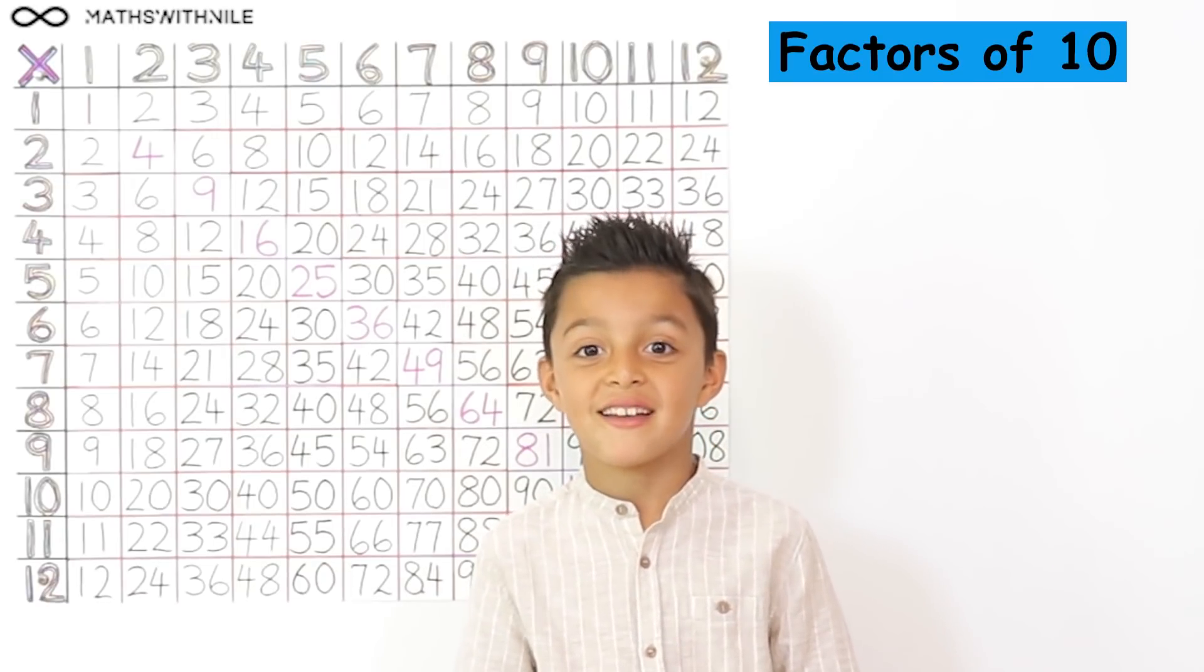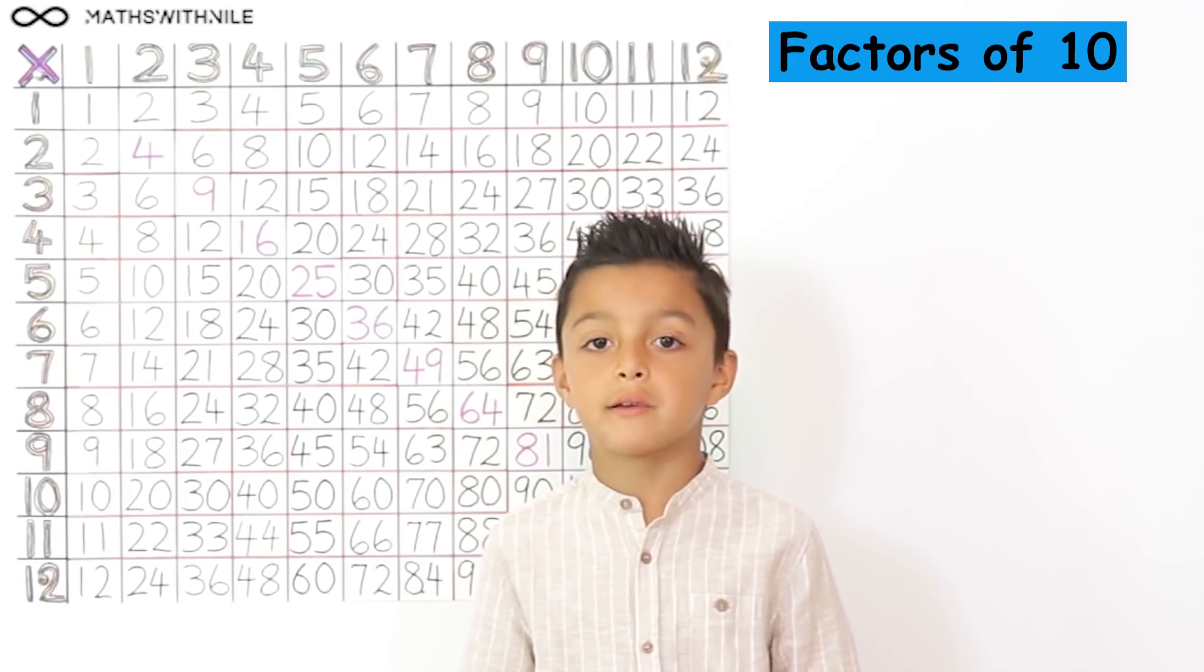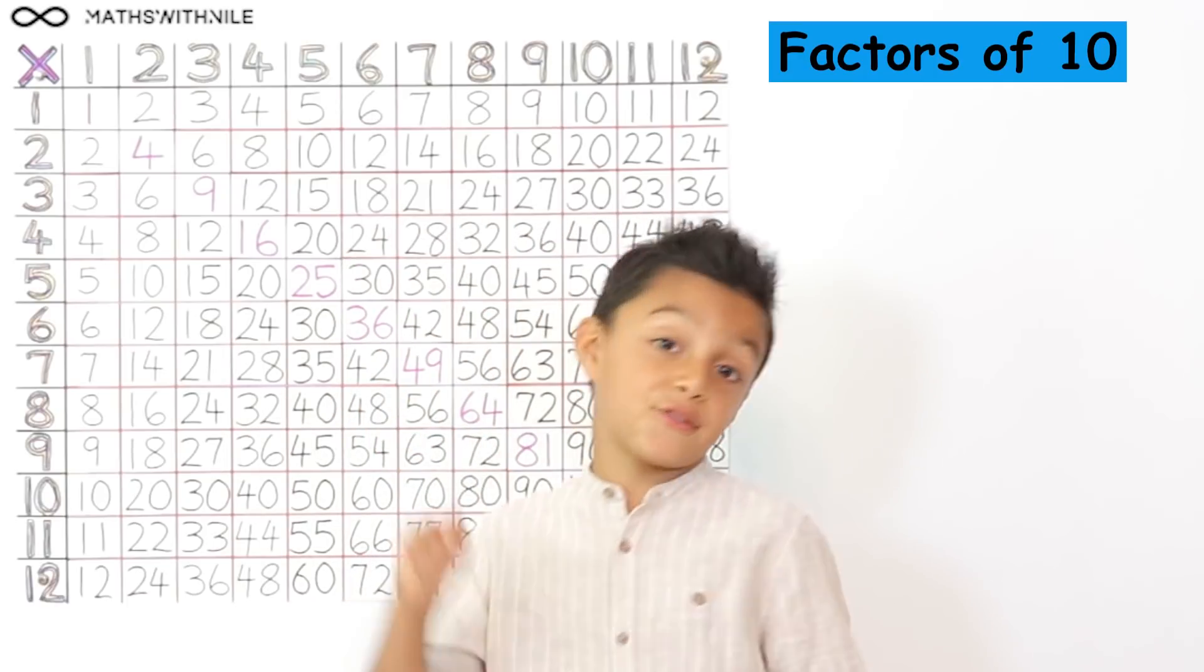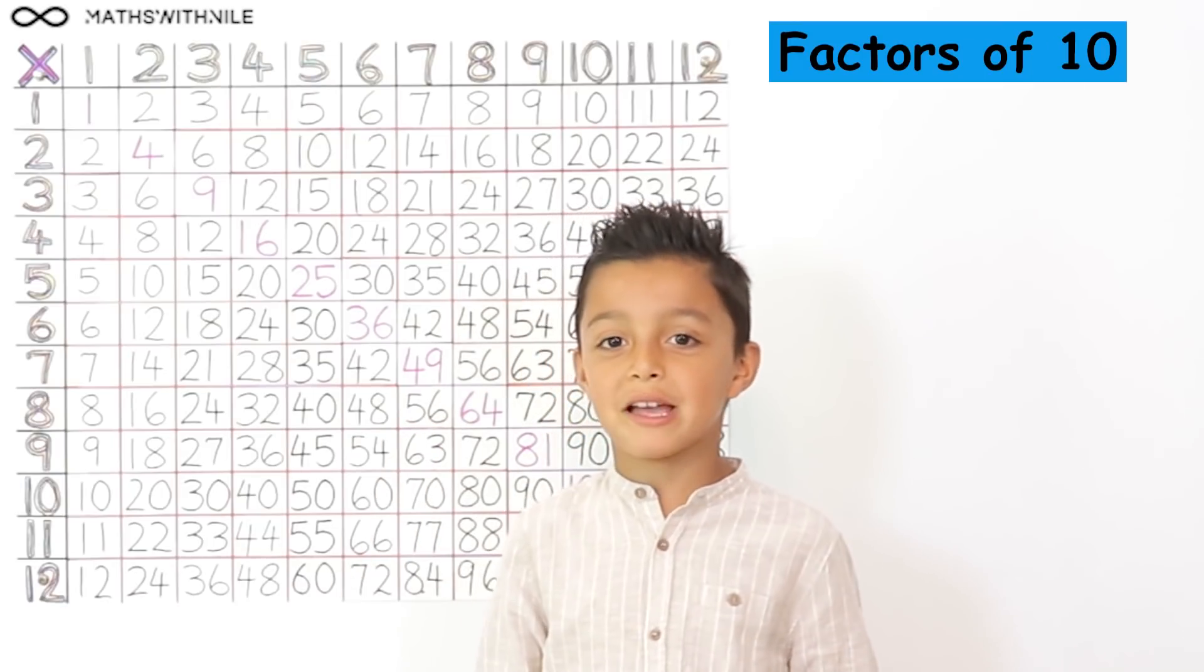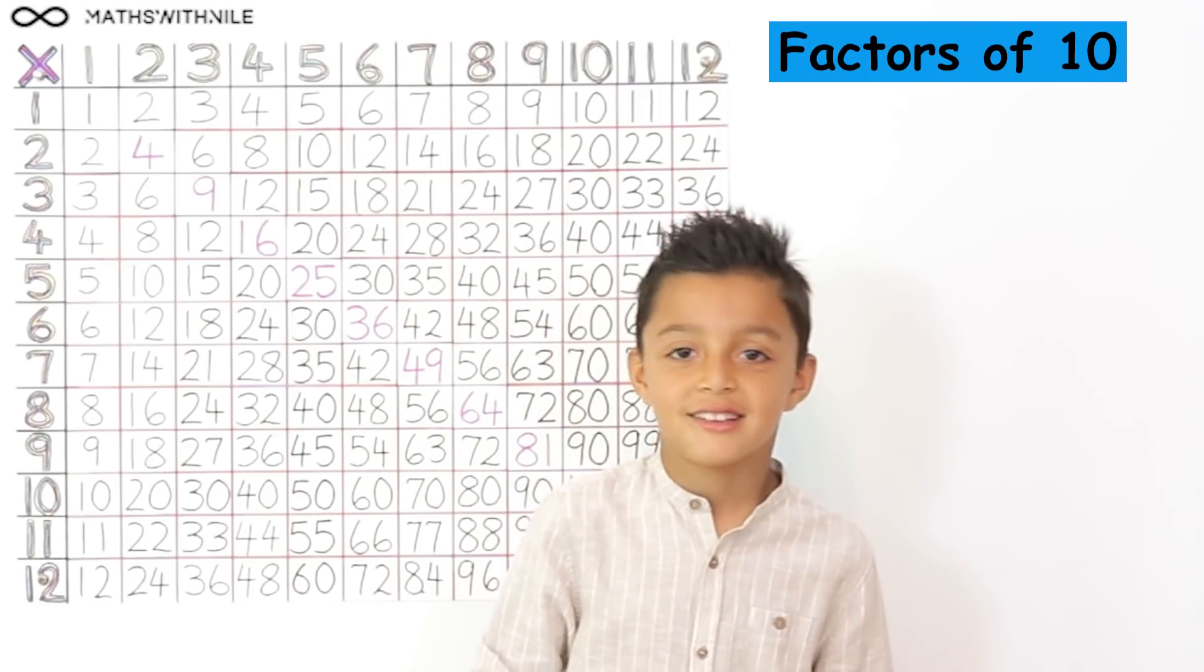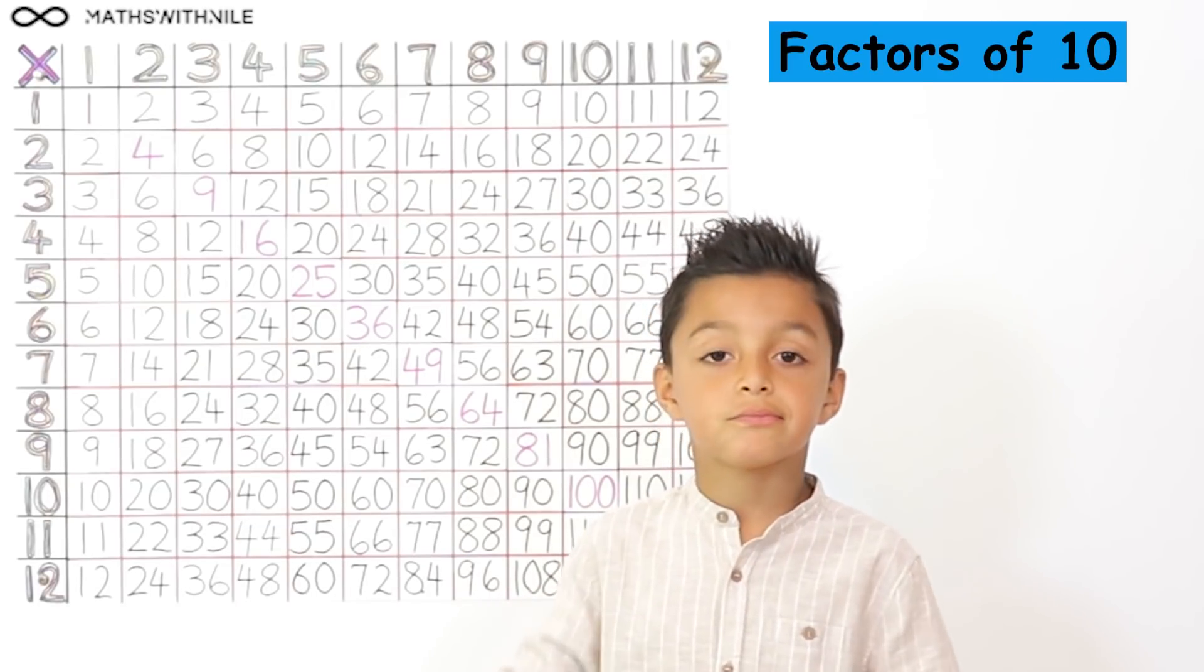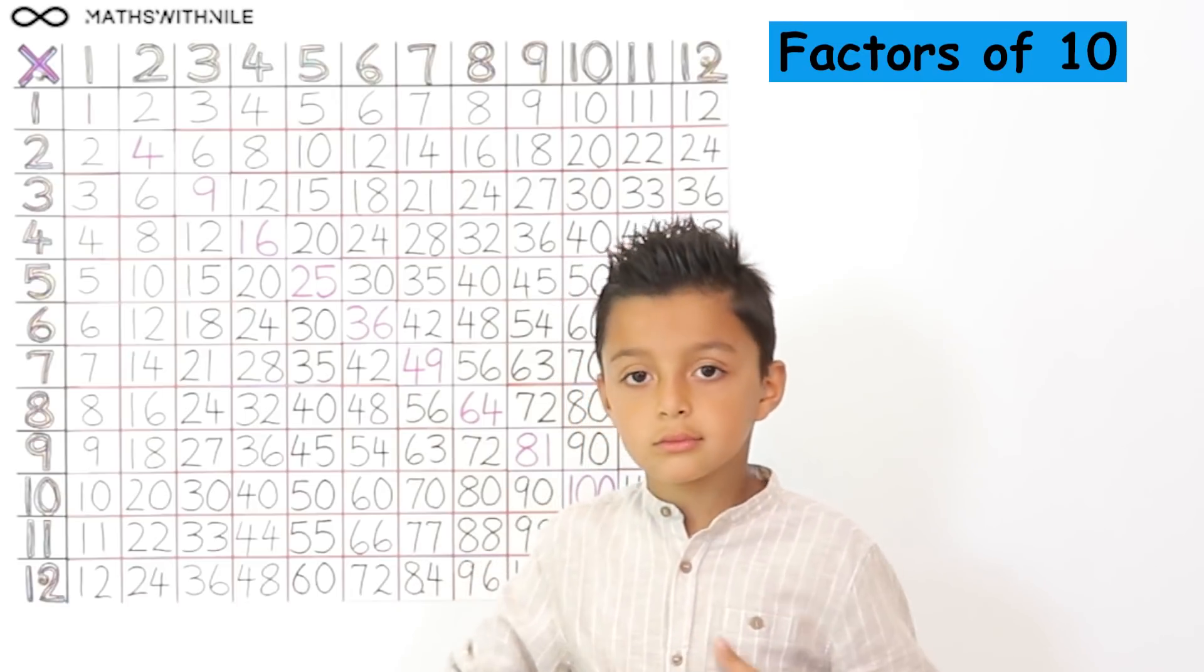5. Exactly, why is 5 a factor of 10? Because 5 can go into 10 and there's no leftovers. Very good, and how many times does 5 go into 10? 2, so that means 2 is a factor of 10 too. Exactly, I like your thinking. So we can actually do factors in pairs. So you said 2 and 5 are factors of 10. Are there any other factors of 10?